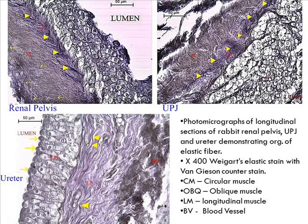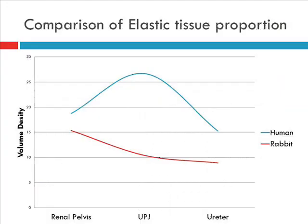Here we see a similar pattern for the elastic tissue in man, where we have a peak of elastic tissue at the UPJ.